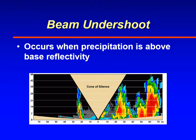Undershoot is a problem that happens when the radar beam is not looking at anything above it. This typically happens when storms move towards the radar and into what we call the cone of silence. In precipitation mode, the radar can only point up to 19.5 degrees — it doesn't look straight up at 90 degrees. As thunderstorms move towards the radar, they start to disappear at higher elevations and you get undershoot.